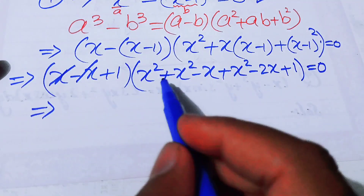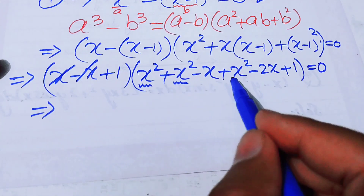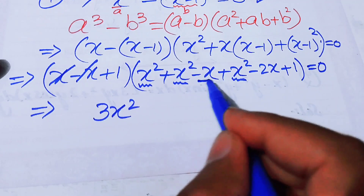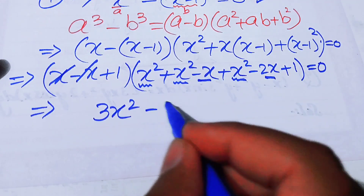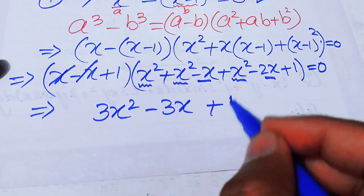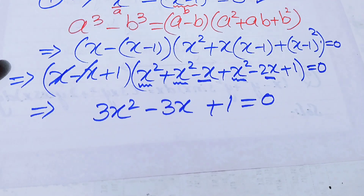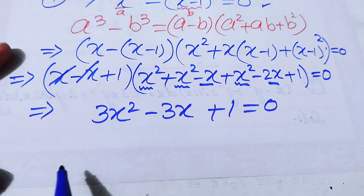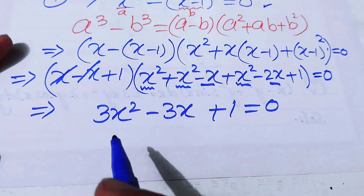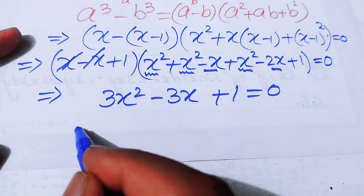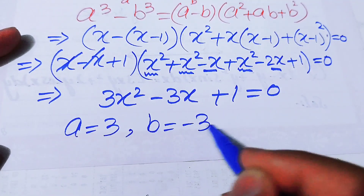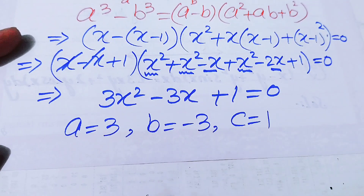Adding the terms, we get 3x² minus 3x plus 1 equals 0. We solve this quadratic using the quadratic formula, where a = 3, b = −3, and c = 1.